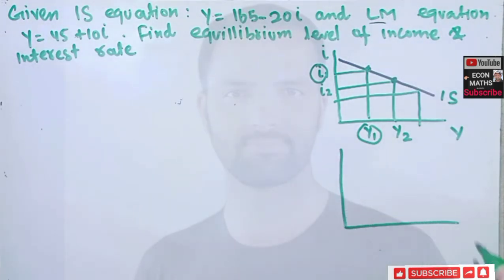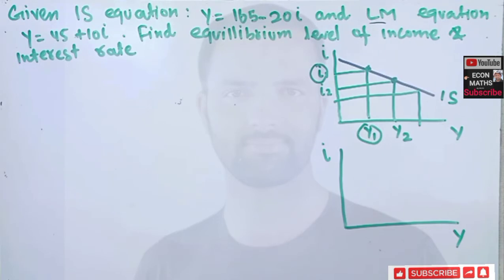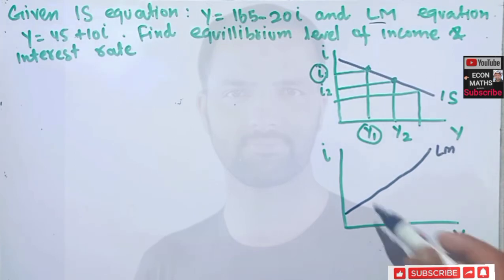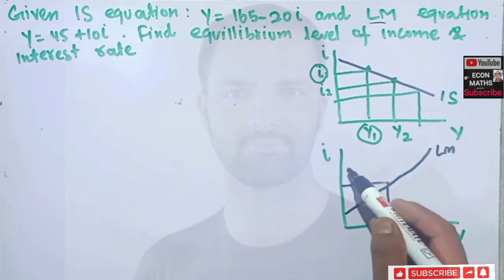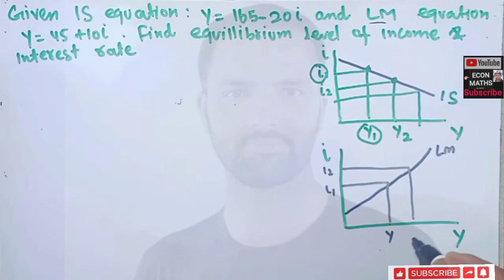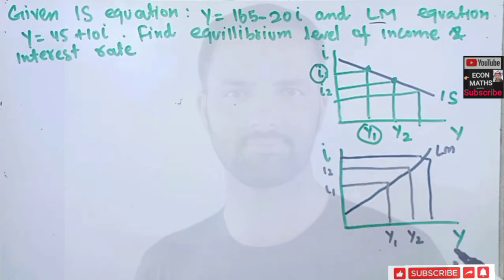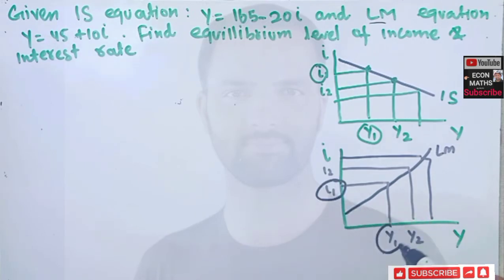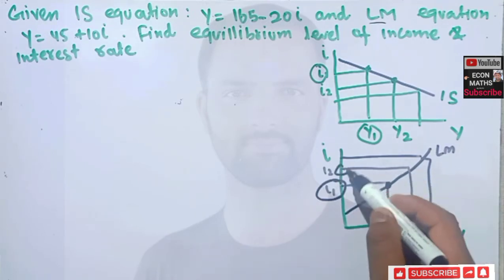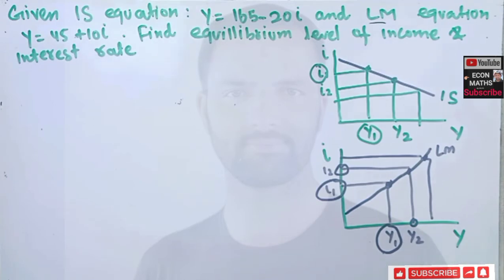The LM curve has a positive slope. It shows us different combinations of rate of interest and level of income — (I1, Y1), (I2, Y2), (I3, Y3) — for which our money market is in equilibrium.